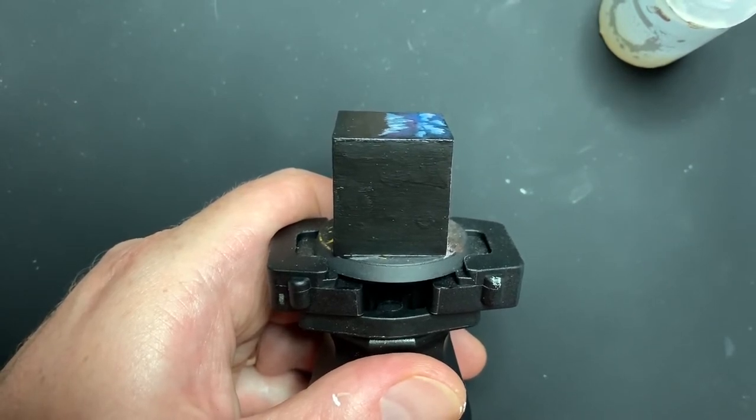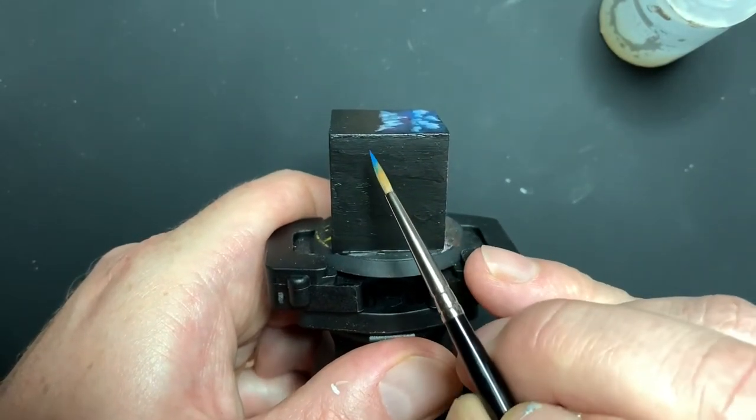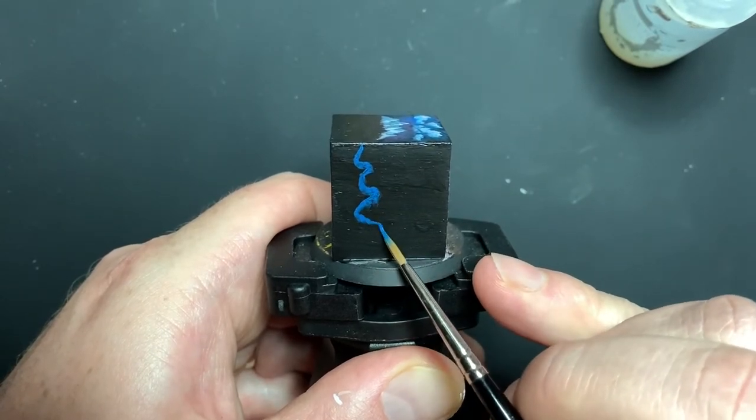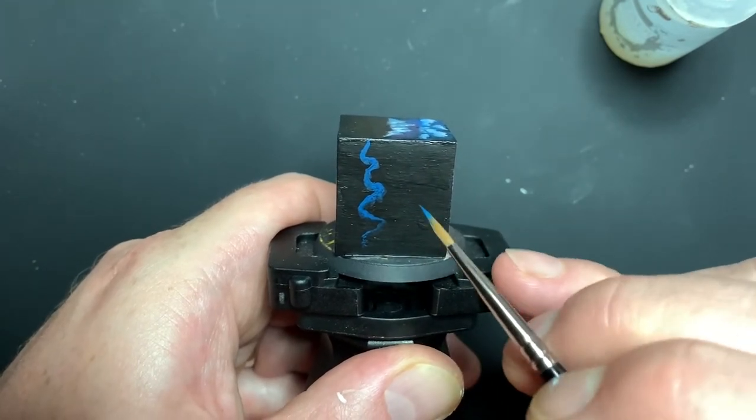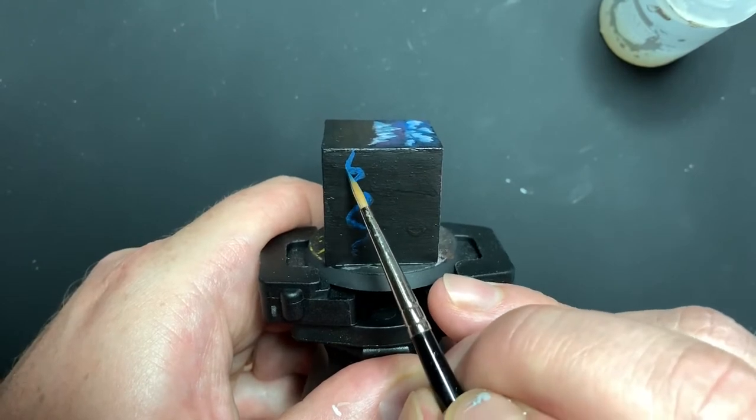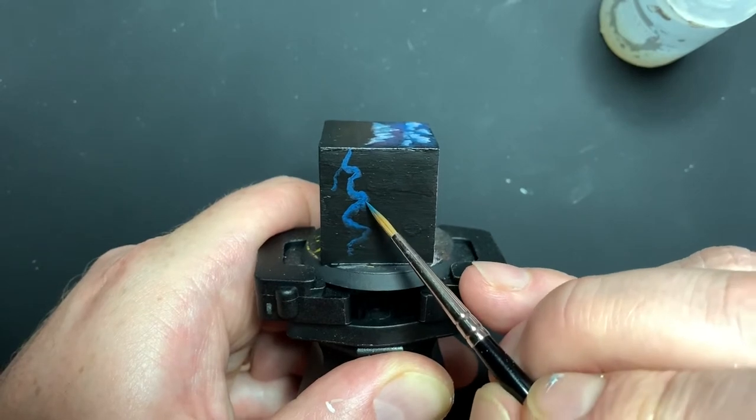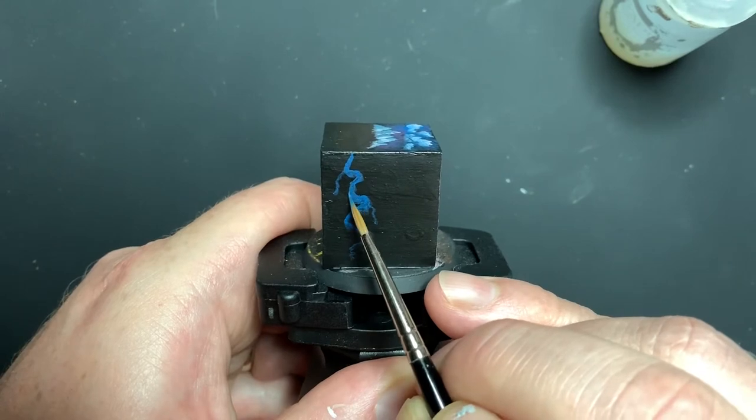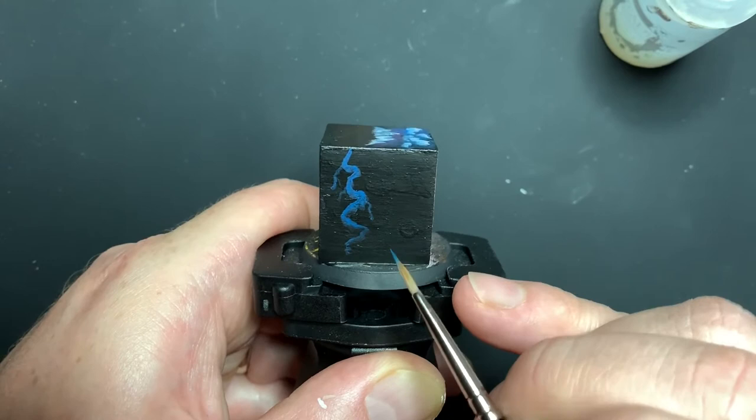So with the pattern, you want to make it random and sort of wiggle the brush around so that you're not creating just a straight line, which wouldn't look super realistic. And I'm going to create little arms coming off it for the other smaller branches of the lightning bolt itself. And you can make as many of these as you want. It's really up to you.